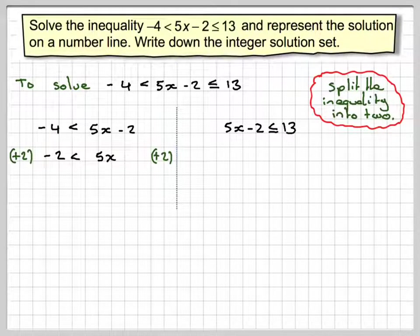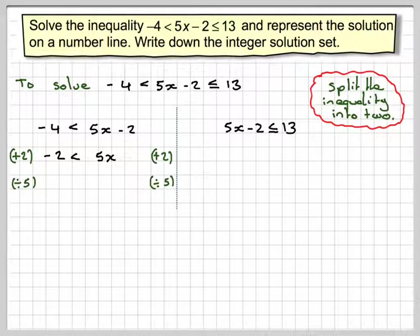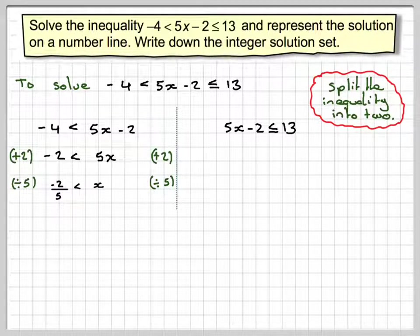The inequality sign follows down, and then we would divide by 5, so it has no effect on the inequality sign. So x will be greater than minus 2 over 5.